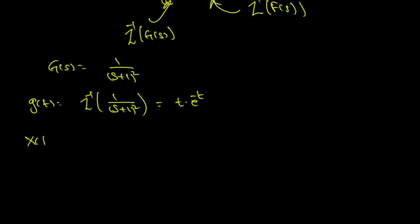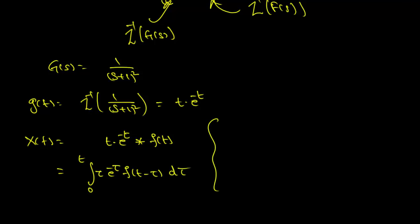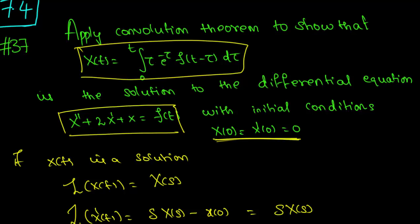Therefore x of t is t times e to the power of minus t convolved with f of t, which equals the integral from 0 to t of tau times e to the power of minus tau times f of t minus tau d tau. This follows because the convolution of g and f is the integral from 0 to t of g of tau times f of t minus tau d tau. So we have shown that x of t equals the integral from 0 to t of tau e to the power of minus tau times f of t minus tau d tau, which is what we were asked to show.